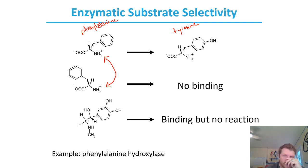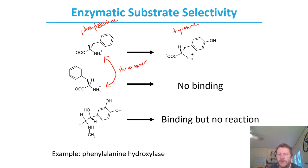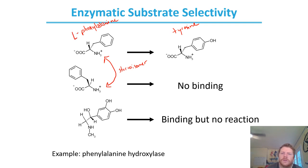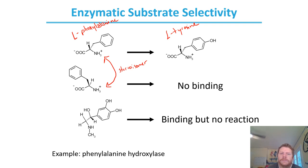These two structures are examples of stereoisomers. Only one stereoisomer of phenylalanine — L-phenylalanine — is converted to L-tyrosine. The D-phenylalanine won't even bind to the enzyme; our enzymes are that specific.